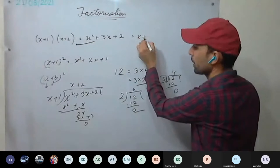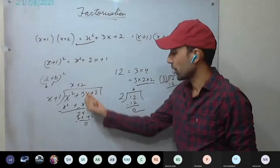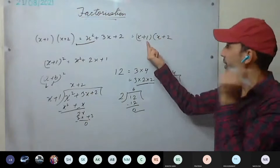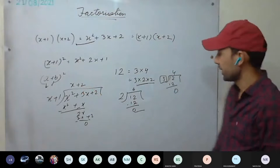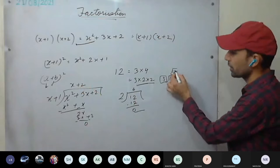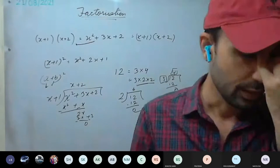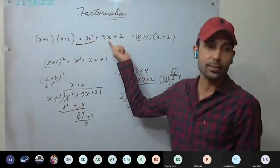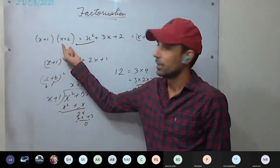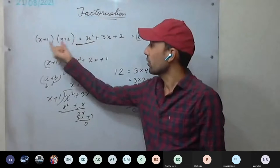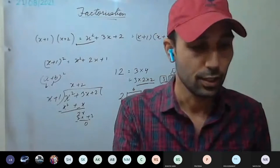So x² + 3x + 2 can be written as (x+1)(x+2). If you divide this expression by (x+2), the quotient is (x+1) and remainder is 0. If you divide by (x+1), the quotient is (x+2) and remainder is 0 — same as with numbers, where 4 is a factor of 12 with remainder 0. This is called factorization: expressing a polynomial as the product of two smaller expressions.